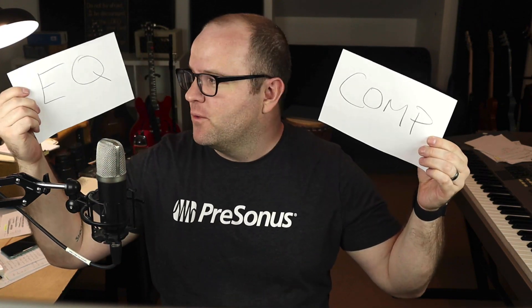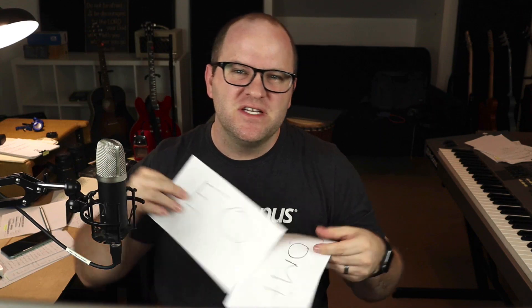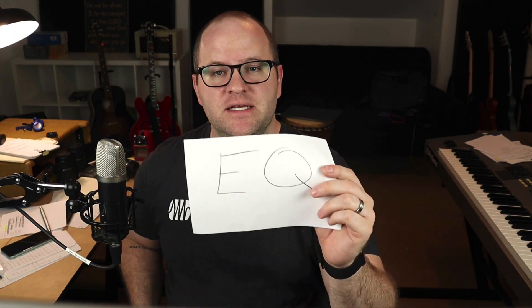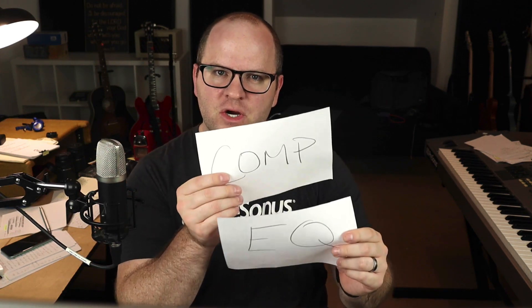If you haven't seen my intro to EQ, or my three rules of EQ video and six rules of compression, be sure to check those out on this channel after you watch this video, if you're still a little hazy on what these are and how to use them. Which comes first? Do I EQ first and then compress the EQ'd signal? Or do I compress it first and then EQ the compressed signal? Is there a proper order? I have a rule of thumb — it's the way I do it, doesn't mean it's the only way, but it works well for me.